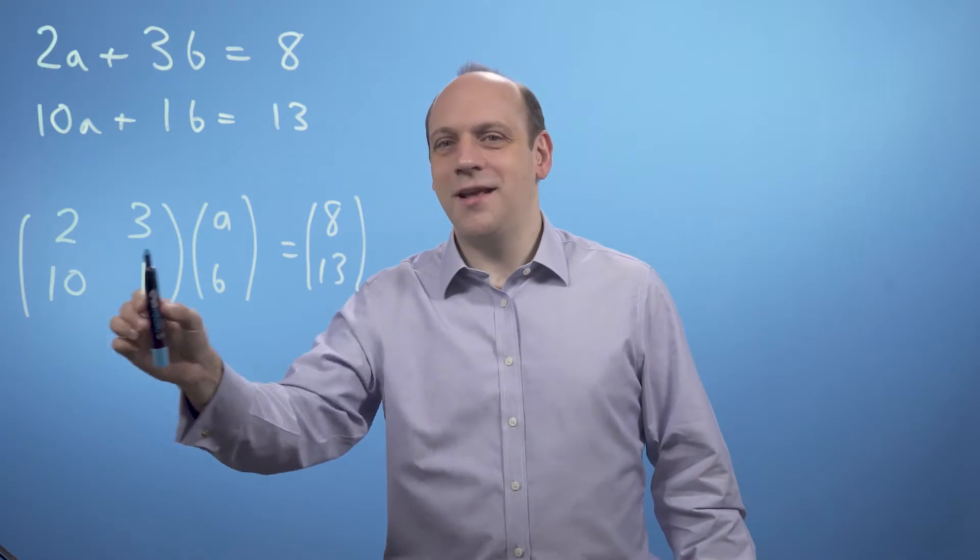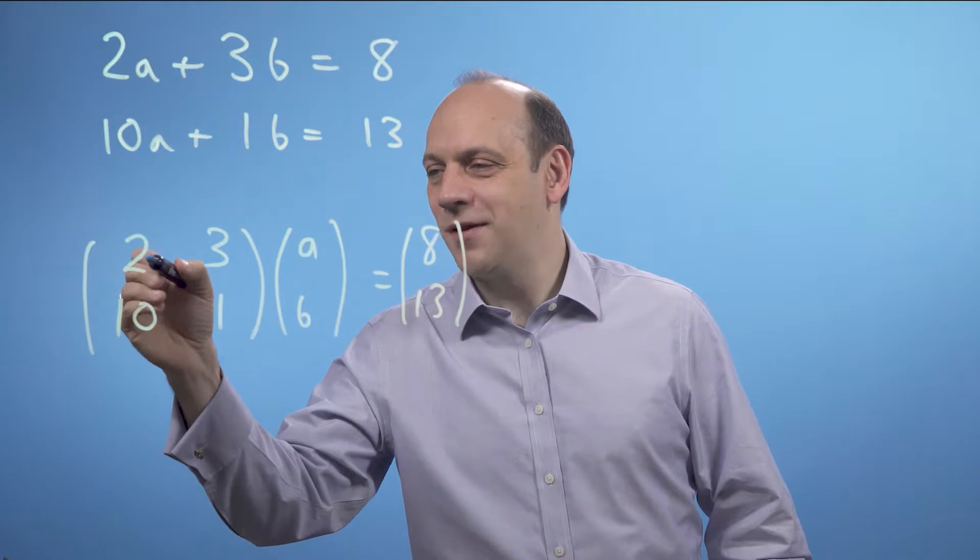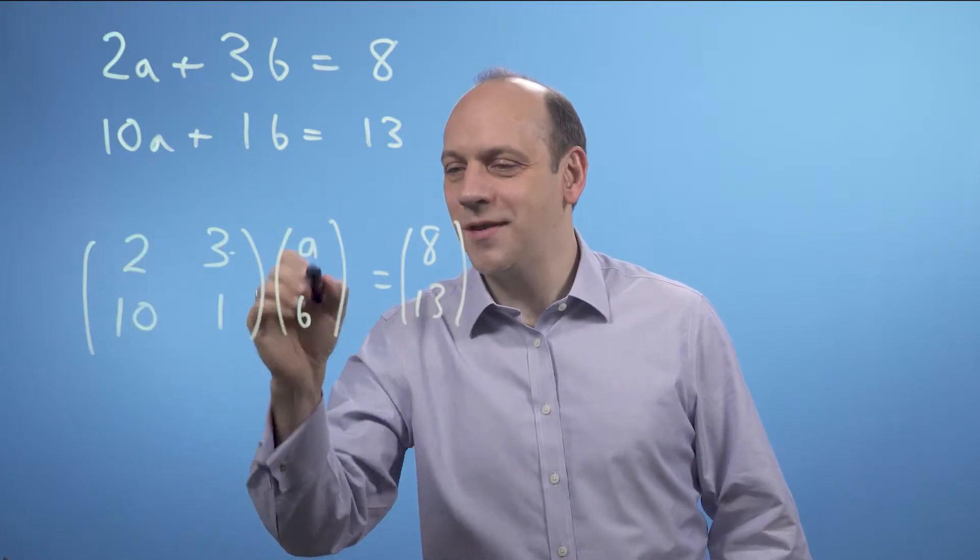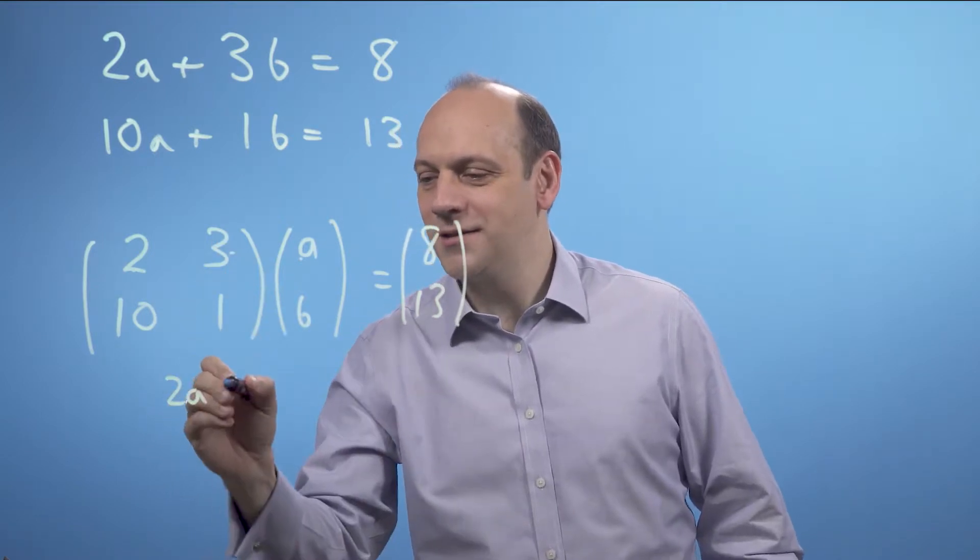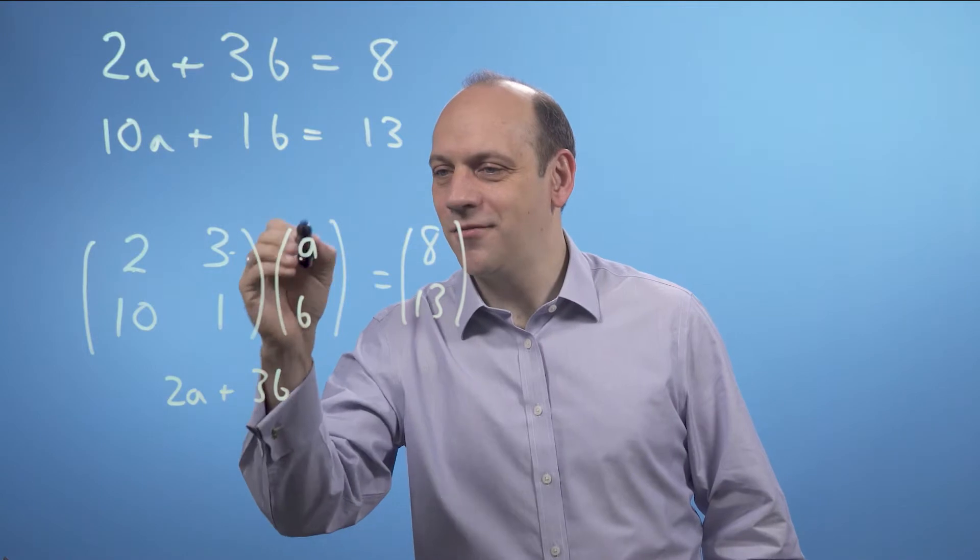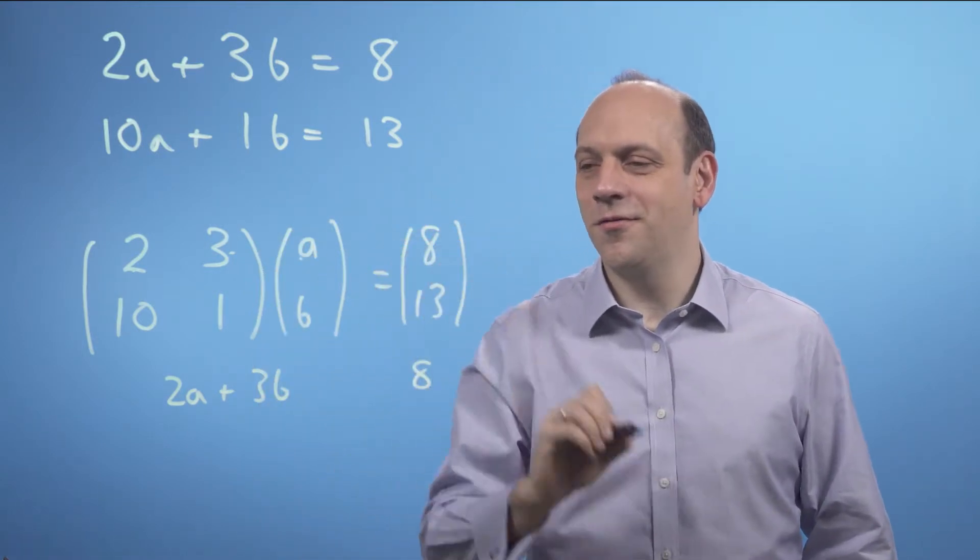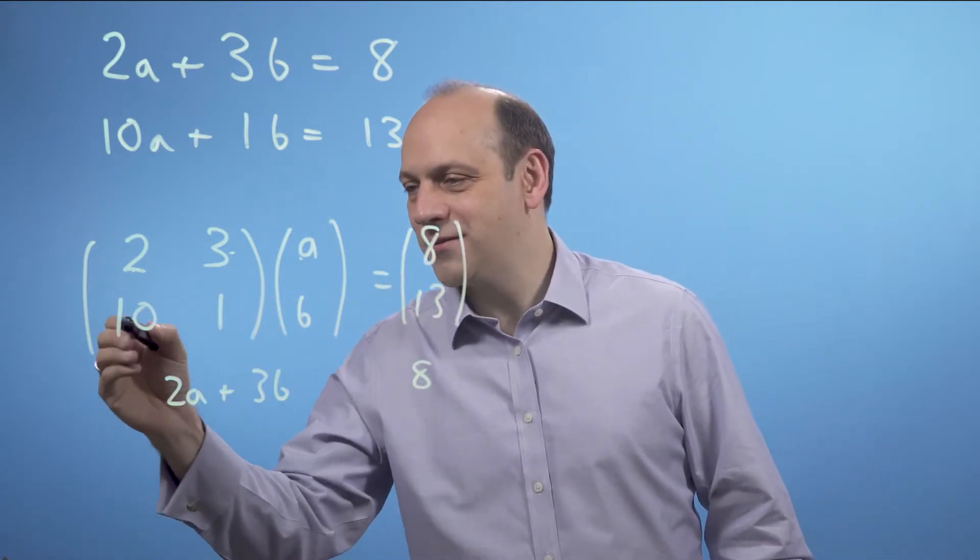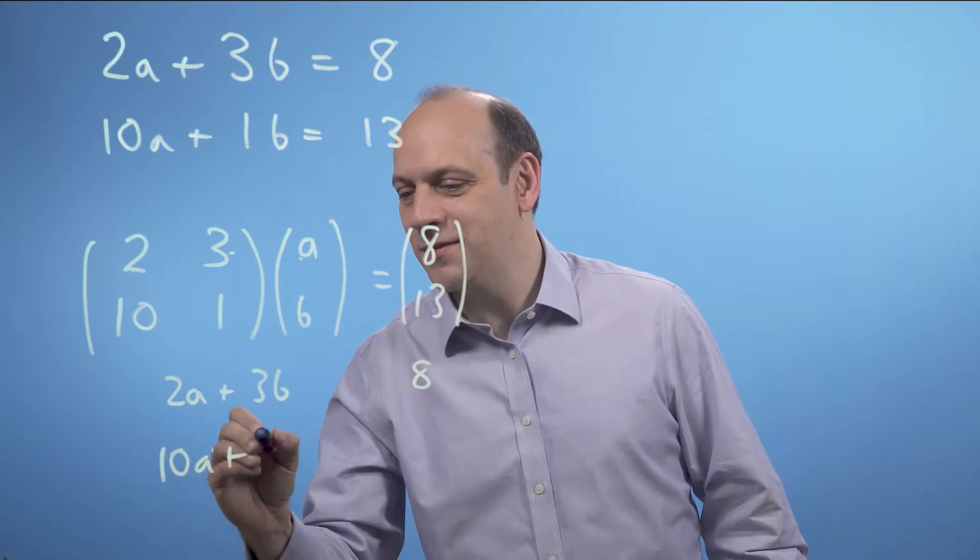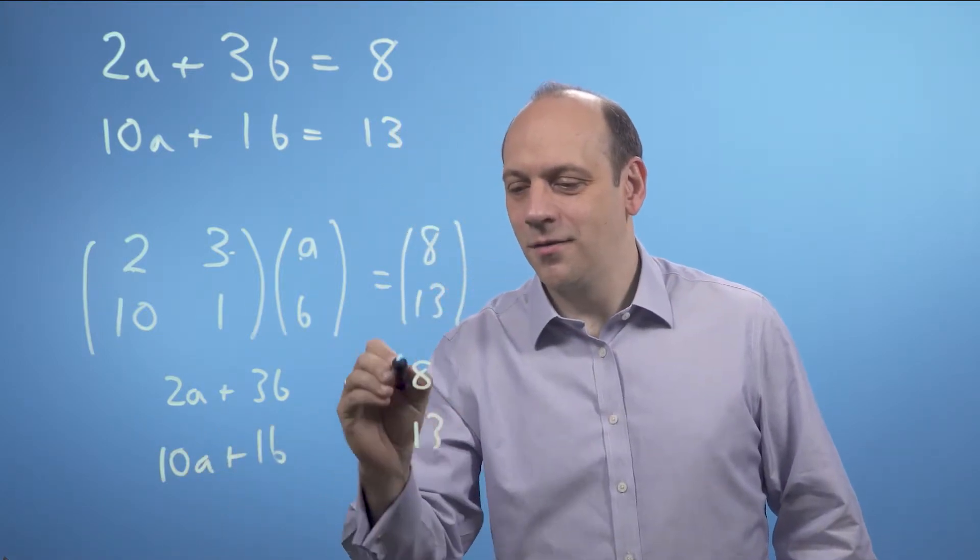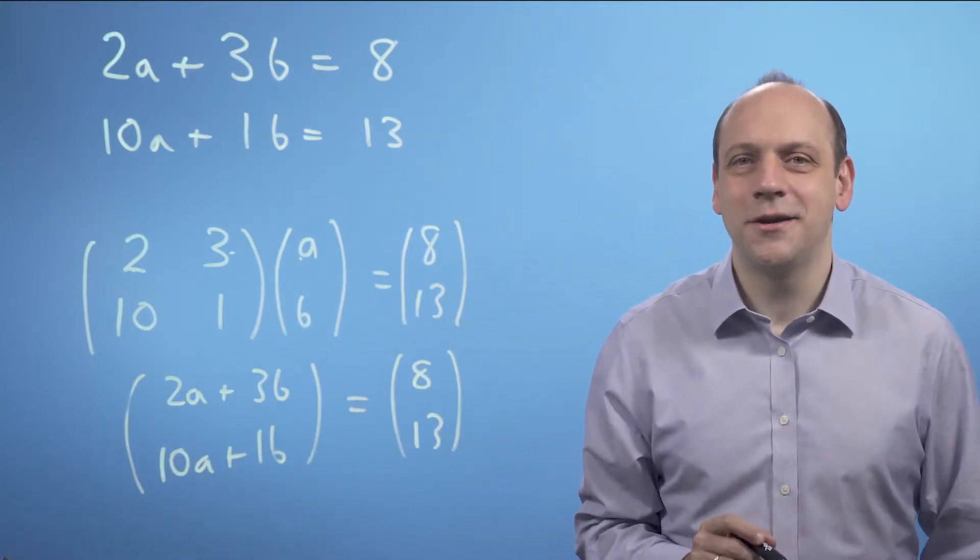And the instruction here is to multiply this out in the following way. So I would multiply the elements in the rows by the elements in the columns. So I'd multiply 2 by A plus 3 times B, that's that row times that column. And I'd say that equaled the top row on the right-hand side. And I'd do the same for the next row. That row times that column is 10A plus 1B is equal to the row on the bottom on the right-hand side. And that looks like my two simultaneous equations.